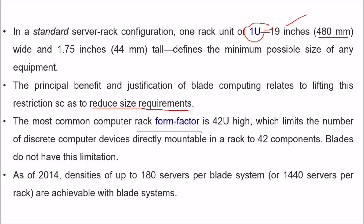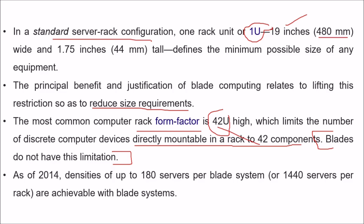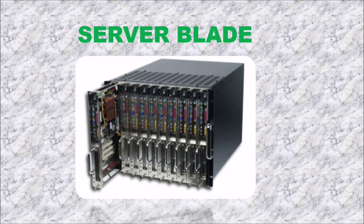The most common computer rack has a form factor of 42 units high, which limits the number of discrete computer devices to 42 components per rack. Blade does not have this limitation — this is an important point. As of 2014, densities of up to 180 servers per blade system, or 1,440 servers per rack, have been achieved with blade systems. This is a huge number of servers.